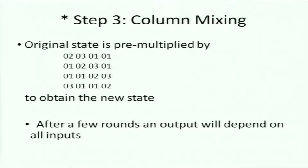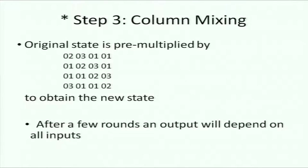To make it even more secure, there's another step called column mixing, which uses field operations. I pre-multiply the state matrix — the 4×4 matrix — by a matrix of field elements from GF(2^8). Each element of the field is a byte, which is two hex characters.